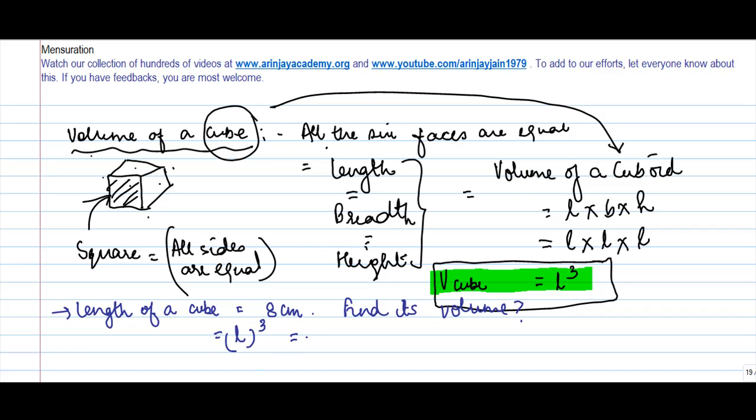Okay, let's see. Length of a cube is equal to eight centimeter, 3 times. 8 centimeter cube. So centimeter will come out as centimeter cube. This I told you that volume is always expressed as a measure of cube.